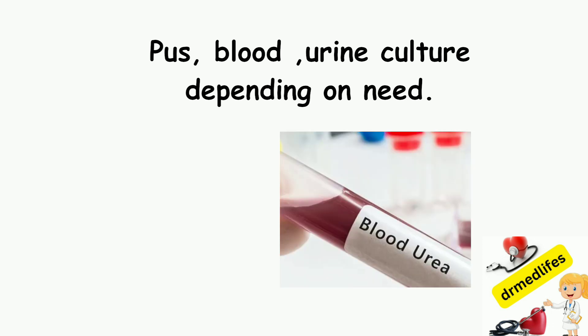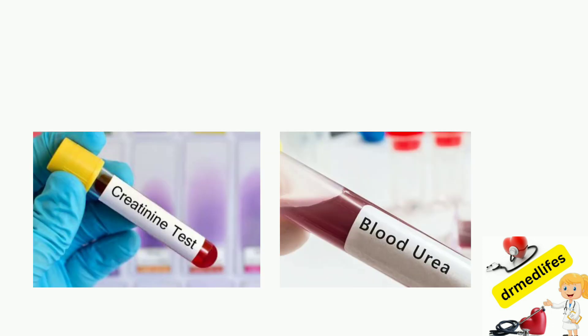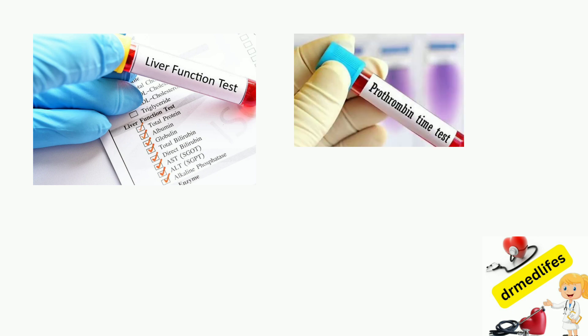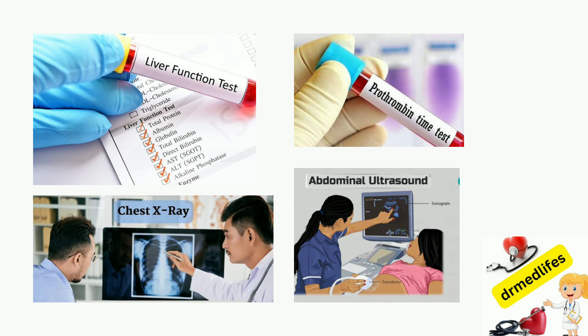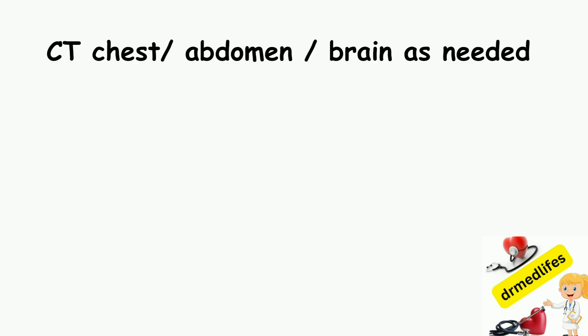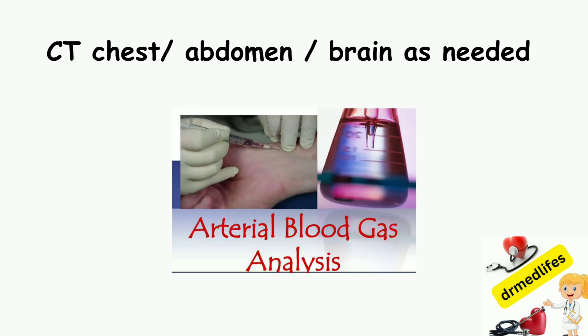Investigations include total leukocyte count, platelet count, C-reactive protein, pus culture, blood culture, and urine culture. Depending on need: blood urea and serum creatinine, liver function tests, prothrombin time, chest X-ray, USG abdomen, CT chest, CT abdomen, or CT brain. Arterial blood gas analysis if needed.